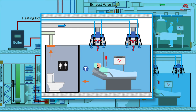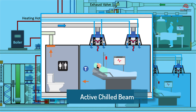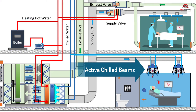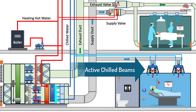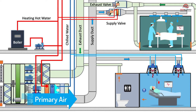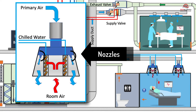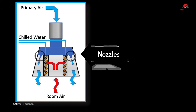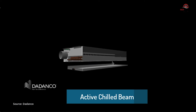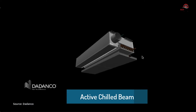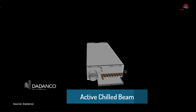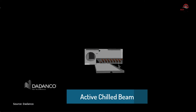Between the two types, the most commonly used is the active chilled beam. An active chilled beam contains one or two coils in a sheet metal housing suspended or recessed within the ceiling. Primary air from an air handler or DOAS unit is connected to the chilled beam, sending air through nozzles that induce airflow from within the space through the coils. The use of primary air from an AHU allows for greater capacities than the passive chilled beam type, which is why active chilled beams are more commonly used.